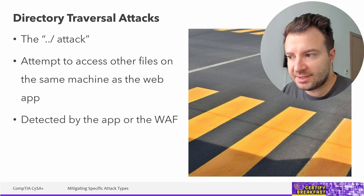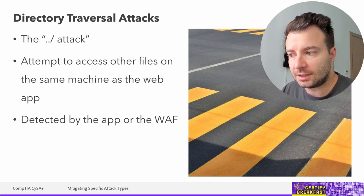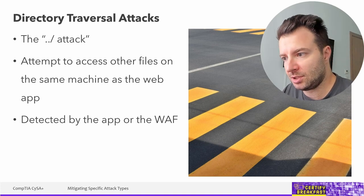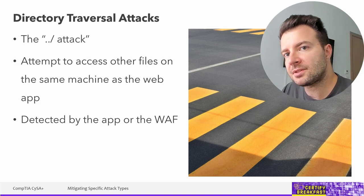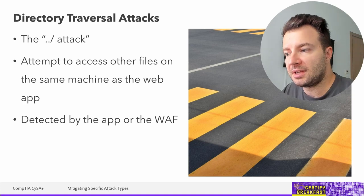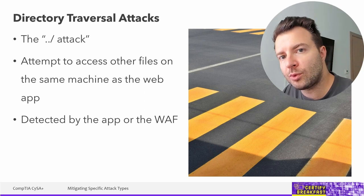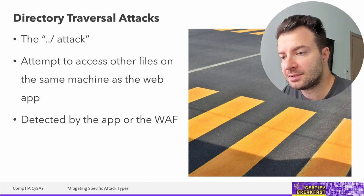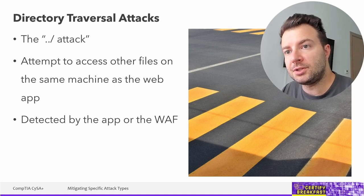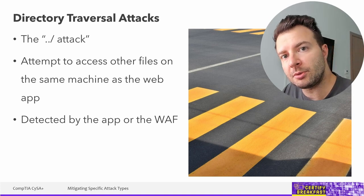If you're not properly sanitizing input that looks like a directory traversal, an attacker could access other locations of the web application or even try to reach the root of the file system. Basic mitigation is to look for dots and slashes within inputs you receive from users, either using the application itself or a dedicated web application firewall. Don't forget that these characters can also be obfuscated through URL encoding. A great additional mitigation is to ensure the application doesn't have permissions outside the locations necessary for it to run.